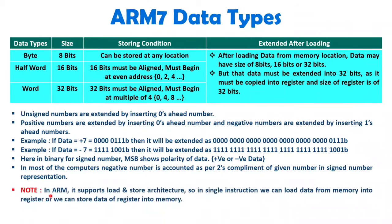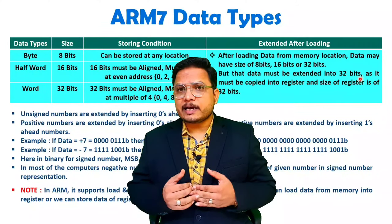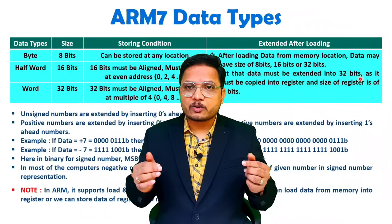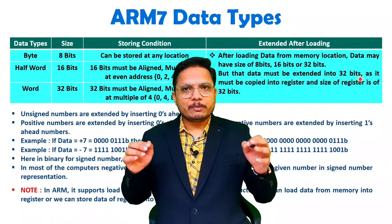In ARM, it supports load-store architecture. So in a single instruction, we can load data from memory into a register, or store data of a register into memory — everything happens with respect to the register. When you store data, it should have proper alignment, and when you load that data inside ARM, it should have extension up to 32 bits. This is how things are happening inside ARM regarding different types of data. I hope you have understood this — if any query is there, just post that in the comment box. I will be happy to help you. Thank you so much for watching this video.